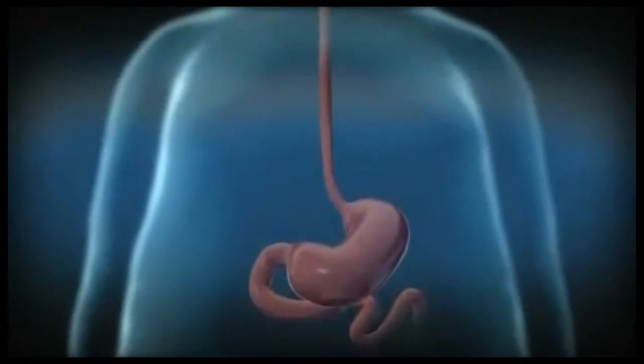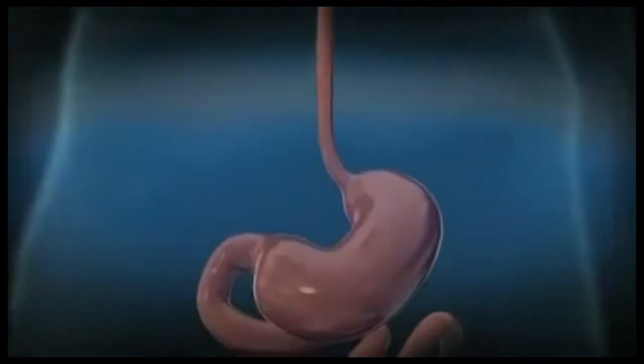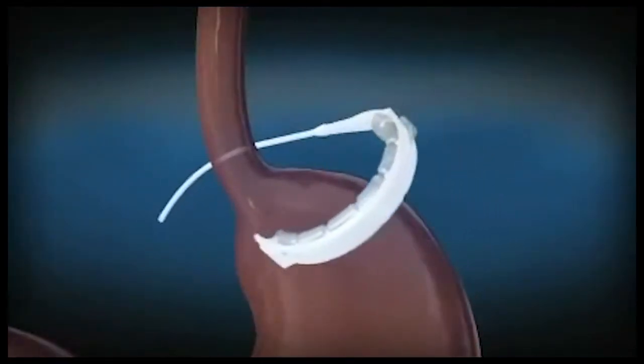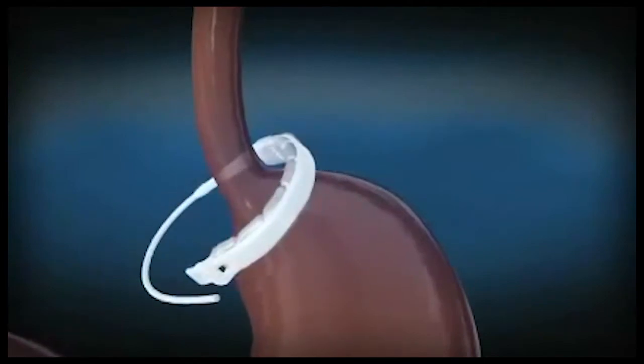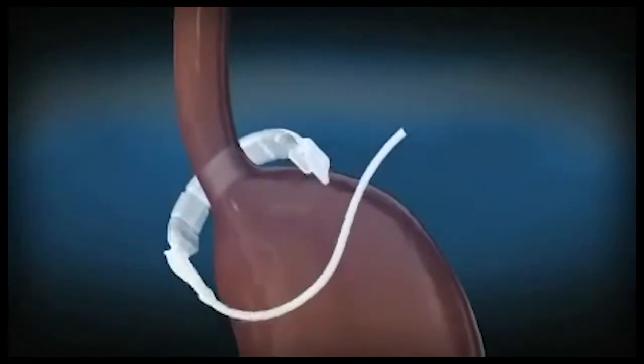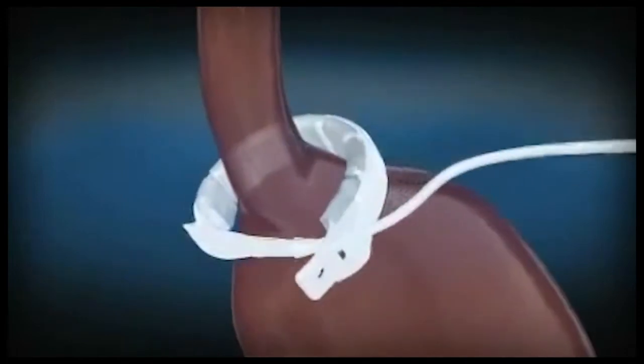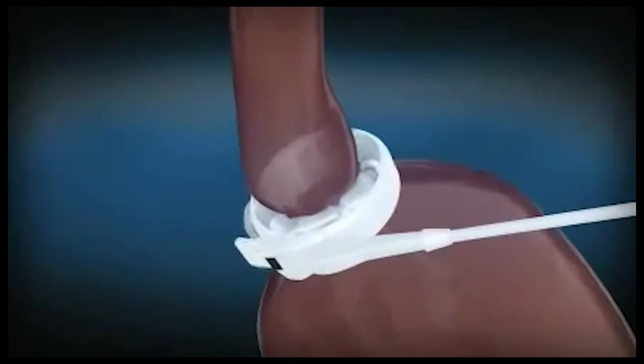The LapBand system surgery is usually performed laparoscopically. The device is inserted through one of five or six small incisions and is wrapped around the upper part of the stomach. This creates a small upper stomach pouch and a narrowed outlet between the new upper pouch and lower stomach.